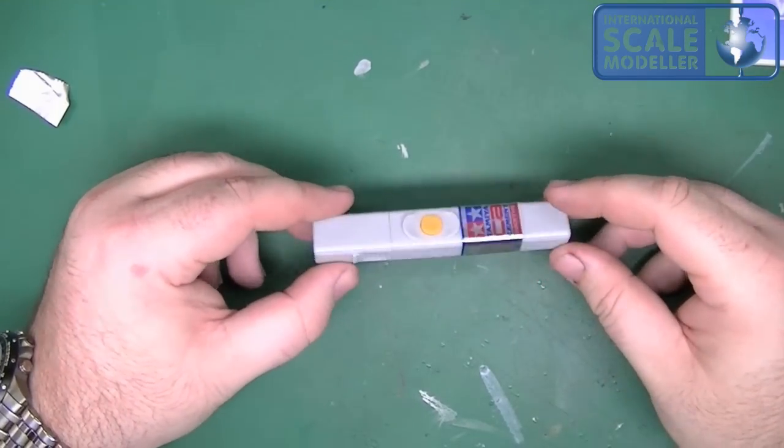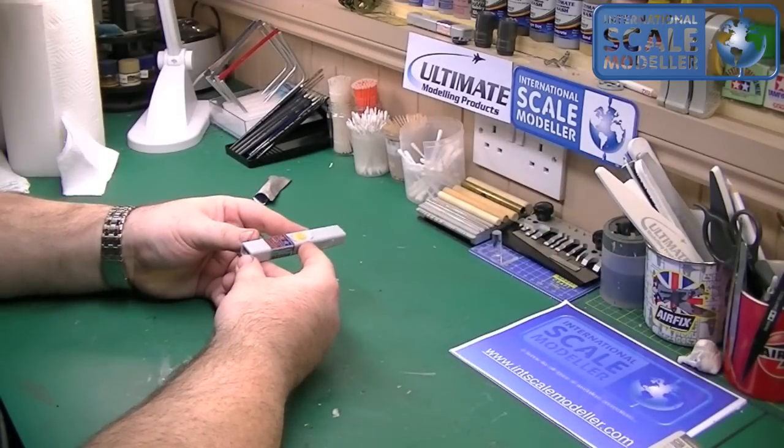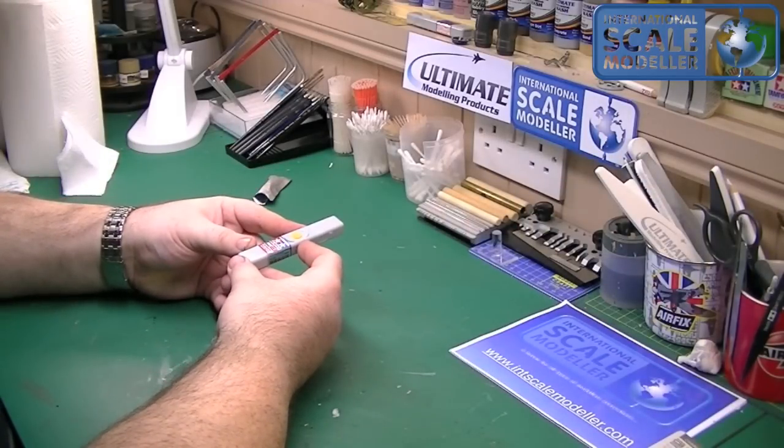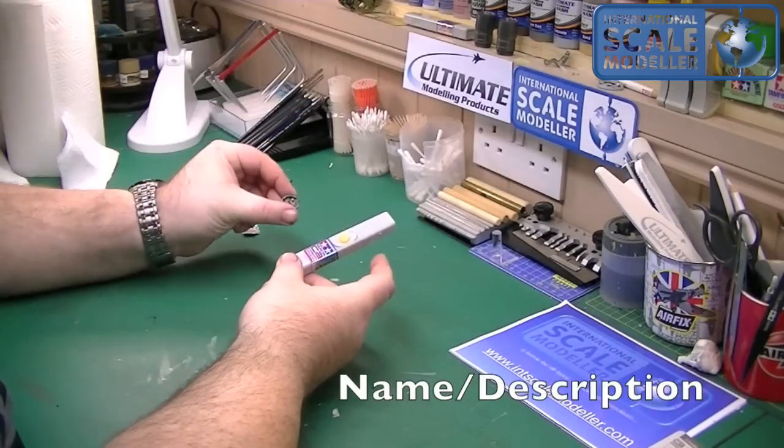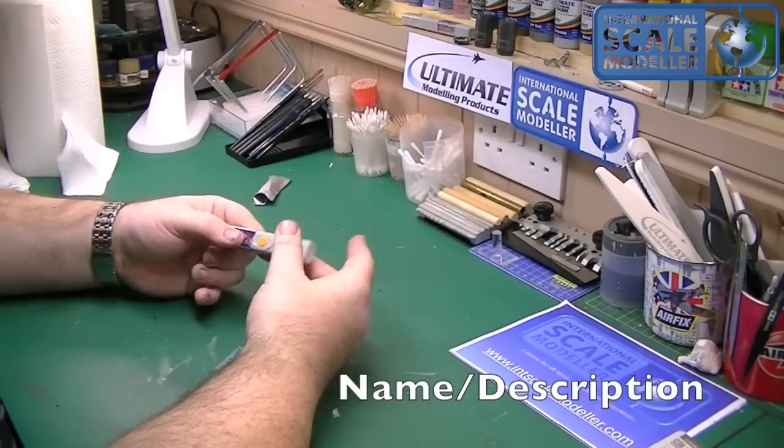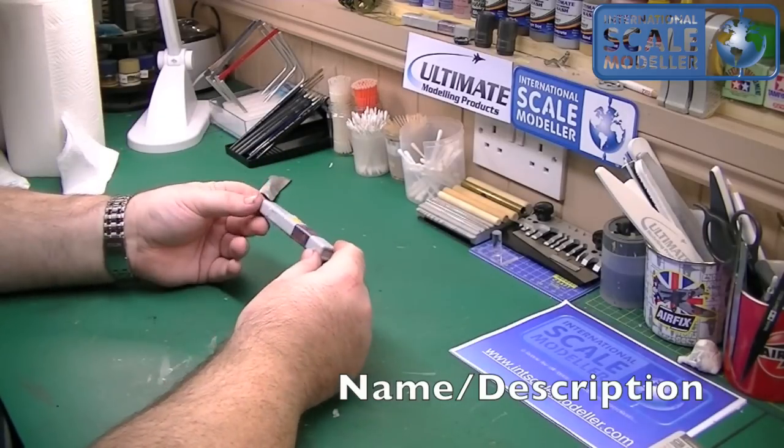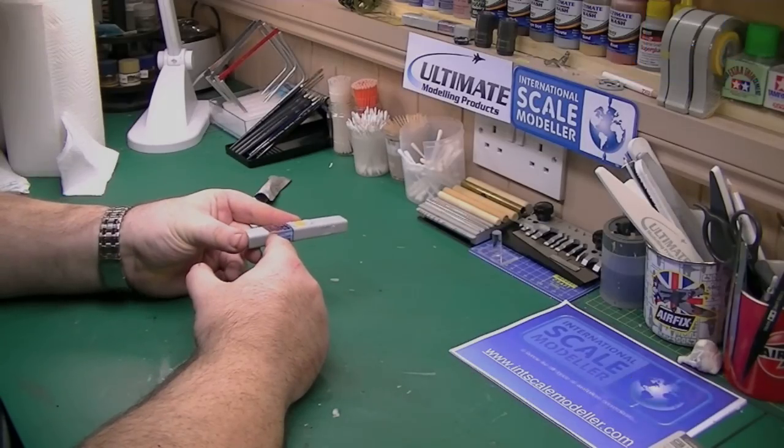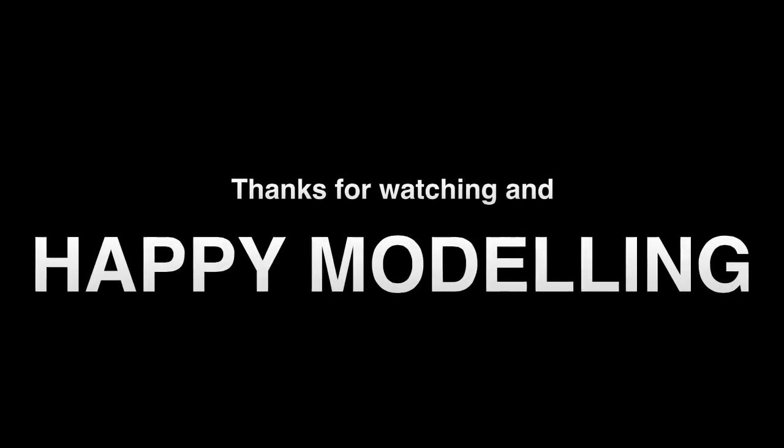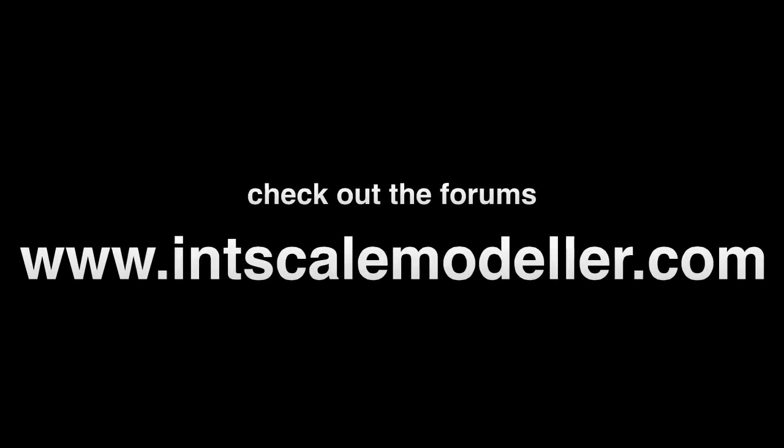So there we go, Tamiya's CA Cement Dispenser. Short review, may not be the most interesting. I think it's a cracking little bit of kit, and I'll certainly be getting more of them. A lot easier, a lot cleaner, and simpler than using a bottle with a little tub to dispense it in. You can literally, what I tend to do if you watch my videos, is just squeeze it out onto a cocktail stick and pop it on. Put the lid back on, job done. So there we go, another review, another good bit of kit.